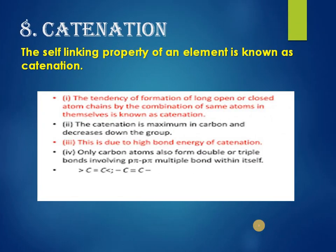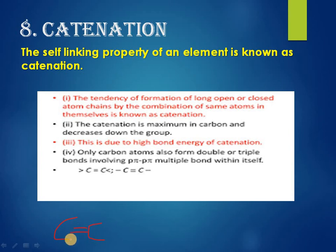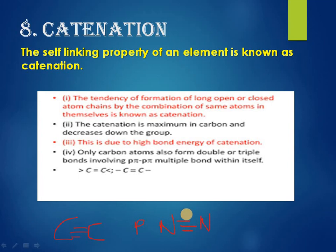Catenation is the self-linking property of an element — when an element forms bonds with its own atoms. Carbon shows maximum catenation and can make single, double, and even triple bonds with itself. Phosphorus also shows catenation but without multiple bond formation. Nitrogen forms multiple bonds in the N₂ molecule. This property will be discussed in more detail when covering the groups of the periodic table.